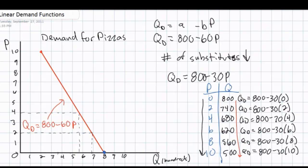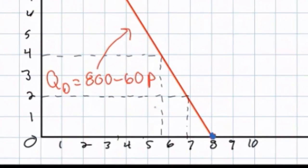This is illustrated as a decrease in the B variable. There's our original demand curve — as the price rose from $2 to $4, the quantity demanded fell from 680 to 560 pizzas. If we plot our new demand curve based on the decrease in the B variable from 60 to 30, we see that the demand curve becomes steeper. Our Q-intercept remains the same at 800 pizzas, but as the price rises, consumers are less responsive than they were before. Therefore, the demand curve slopes more steeply.